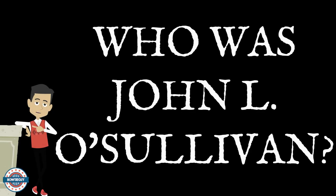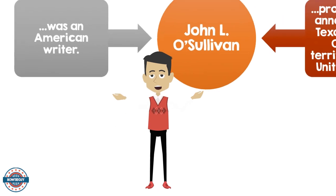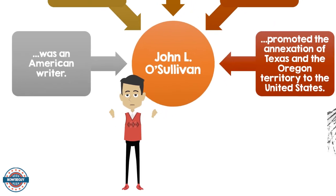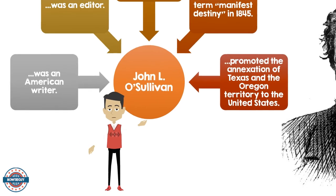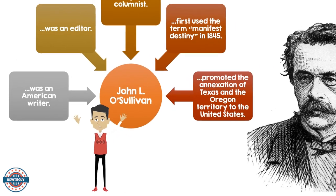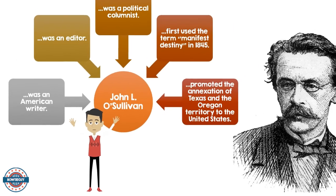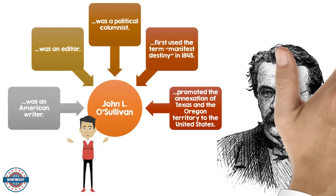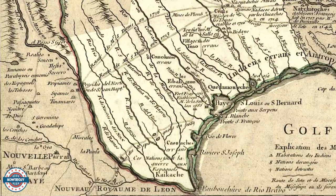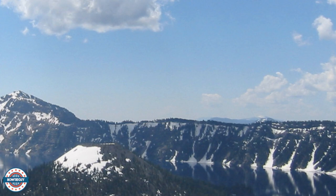Who is John L. O'Sullivan? John L. O'Sullivan was an American writer, editor, and political columnist. He first used the term Manifest Destiny in 1845. He promoted the annexation, or the taking, of the Texas and Oregon territories by the United States.